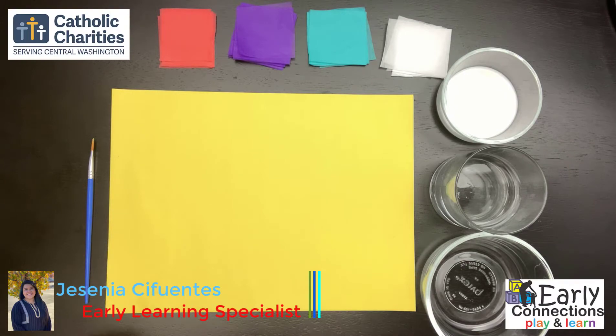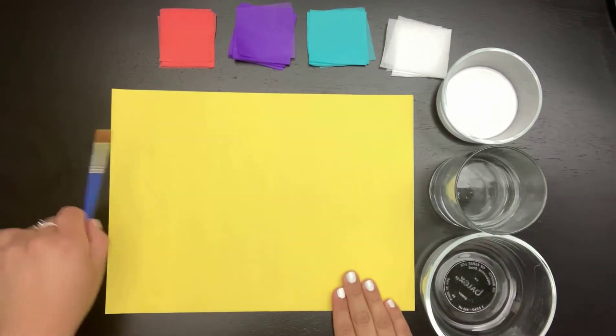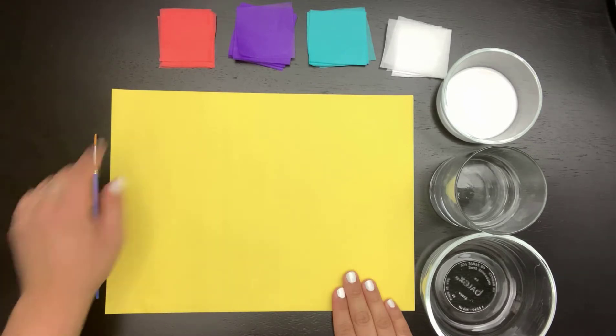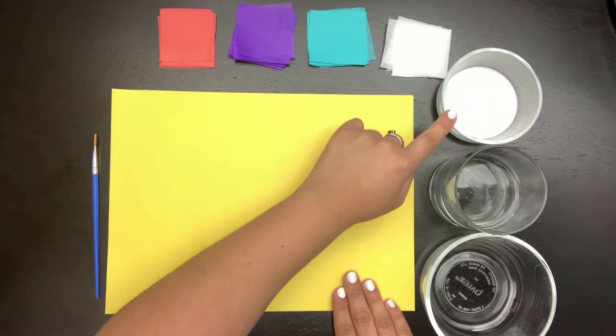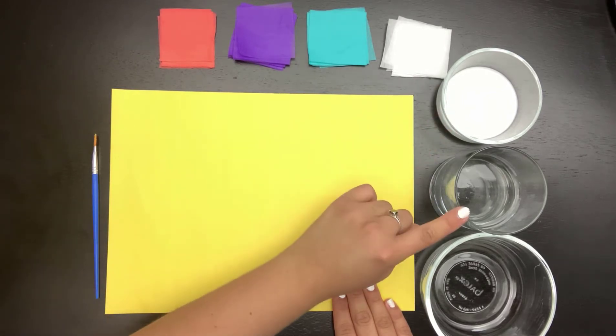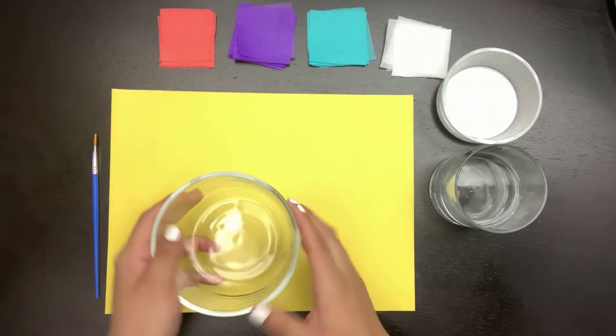The materials we will need are one piece of construction paper, one paintbrush, several squares of colorful tissue paper, a third cup of school glue, a half cup of warm water, and one empty container that we will use to mix all of our ingredients.